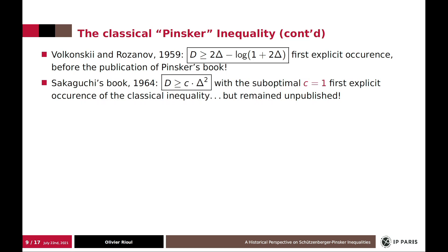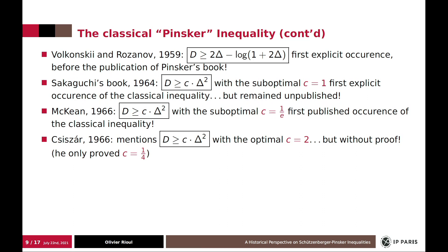Then later in 1964, the first occurrence of the classical formulation of Pinsker inequality was in a book by a Japanese researcher, Sakaguchi. But unfortunately, this book was never published. So the first published occurrence of a Pinsker inequality of the classical form was by Kagan, 1966, with suboptimal constant.